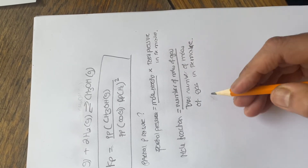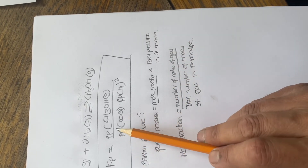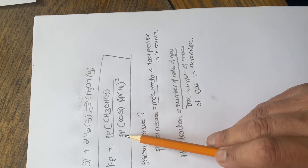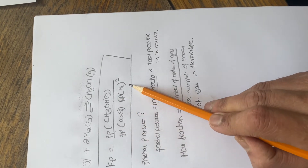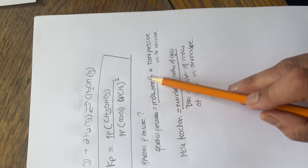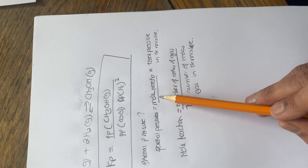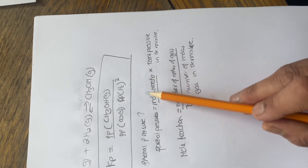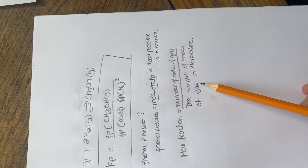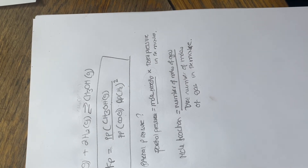Once you know the partial pressure of each individual component — partial pressure of CH₃OH, partial pressure of CO, partial pressure of H₂ — you can work out each one by calculating the mole ratio for each individual part. That's how you work out Kp overall.